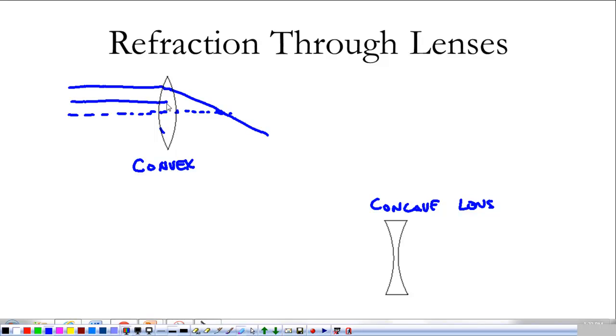And for a convex lens like this, it all tends to focus at that focal point. Every ray coming in parallel is bent through the focal point. So we call this a converging lens. The light tends to be focused at the focal point.